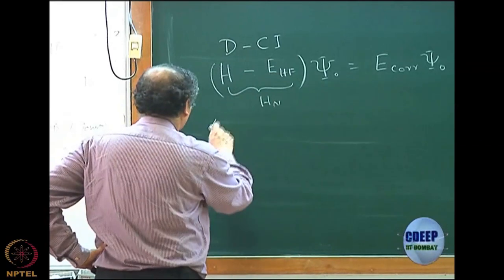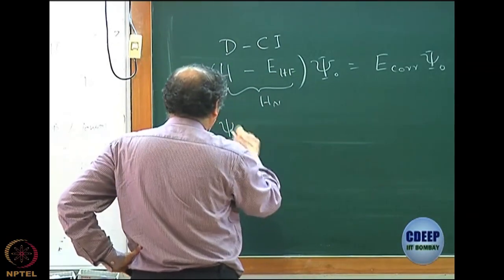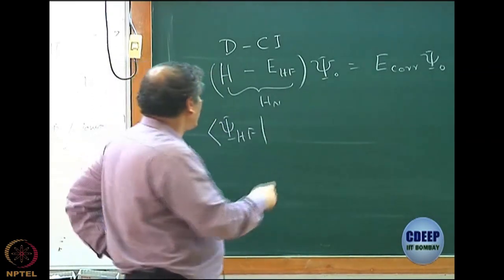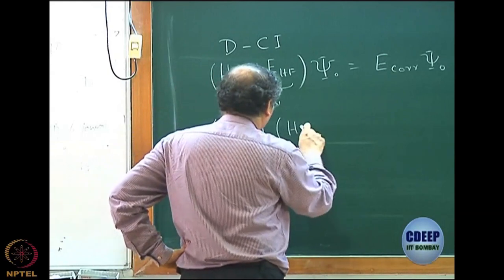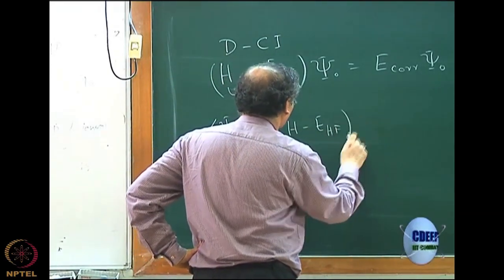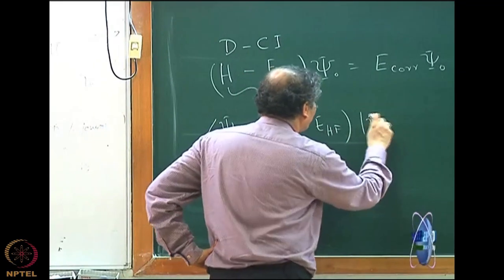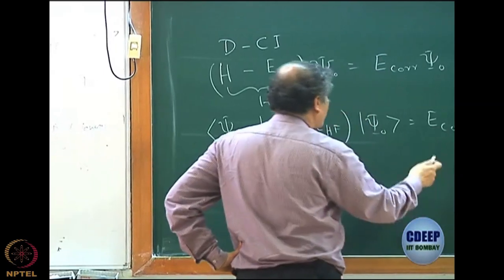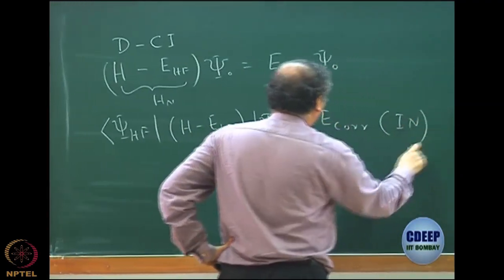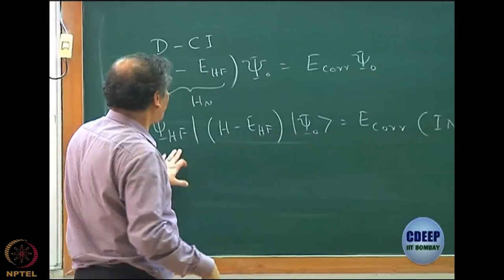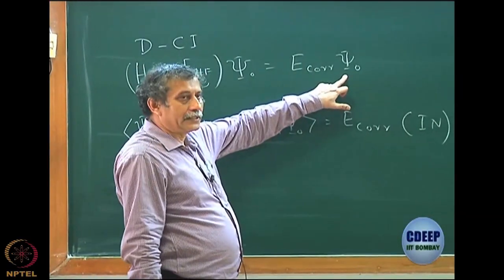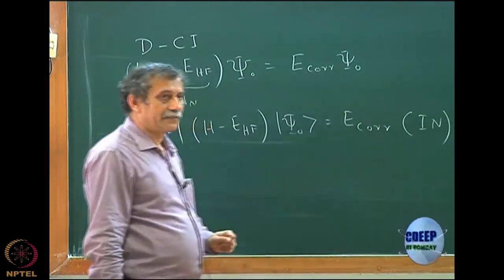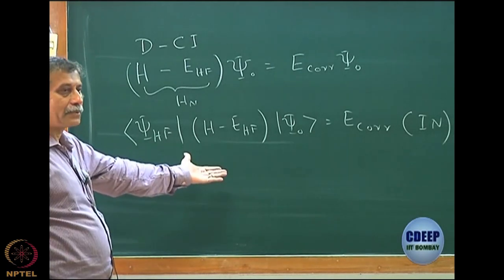We then presented the DCI equation by first projecting this new Schrödinger equation — (H − E_HartreeFock) ψ₀ = E_correlation — with the Hartree-Fock state. Note that we are using intermediate normalization, so ⟨ψ_HF | ψ₀⟩ = 1. This gives us an expression with only E_correlation on the right-hand side. That is the equation for the correlation energy — a very simple equation.